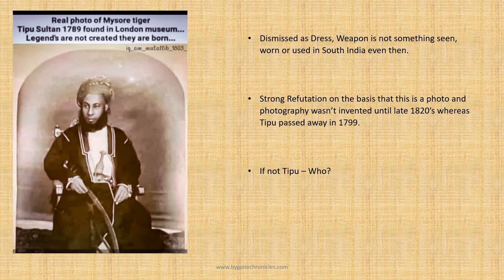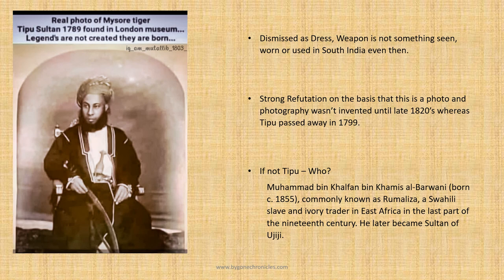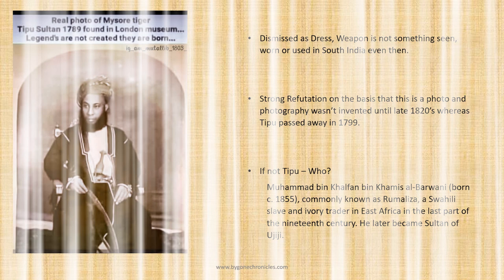So the question arises — if not Tipu, who? Well, we found that this is the photo of Muhammad bin Khalfan, commonly known as Rumeliza, a prominent slave trader of Zanzibar in the 19th century. He also later became the Sultan of Ujiji. These places — Zanzibar and Ujiji — are in Tanzania.